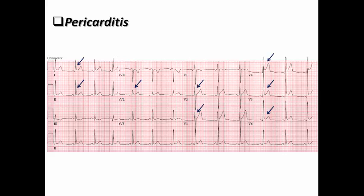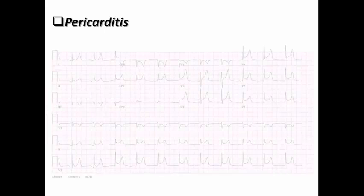As we can see in this ECG, there is diffuse ST elevation involving leads 1, 2, AVL, and also V2 to V6. This diffuse ST elevation is associated with PR segment depression in the same leads. We can also see ST depression in AVR and V1, which is of course more suggestive of acute pericarditis.